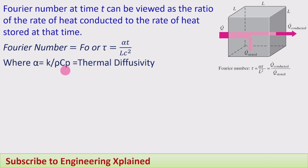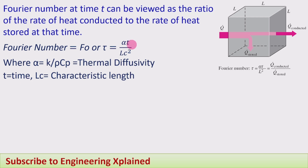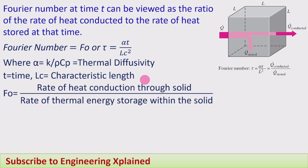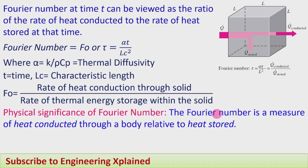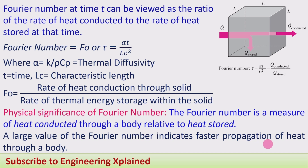Here, α = K / (ρ·Cp), which is the thermal diffusivity — representing how much diffusion of heat occurs within the solid. T is the time for which heat is transferring or storing, and Lc is the characteristic length given by the volume-to-area ratio. The Fourier number represents the rate of heat conduction through the solid relative to the rate of thermal energy storage within the solid. A large Fourier number indicates faster propagation of heat through the body, while a smaller number indicates less heat conduction.